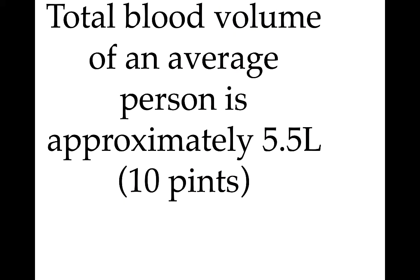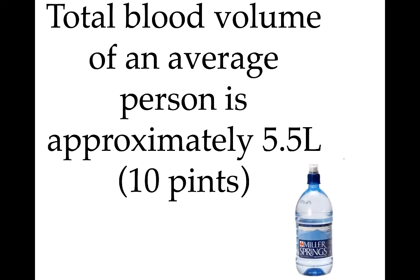First of all, the average human adult has approximately 10 pints of blood. That would be about five and a half liters. If you can think of a one-liter bottle or even a two-liter bottle, figure out what five and a half liters would be — that's how much total blood the average adult has.